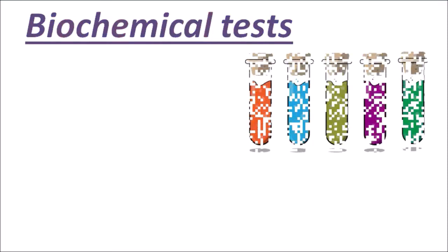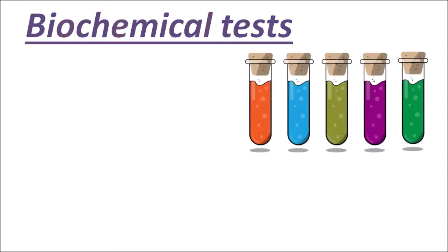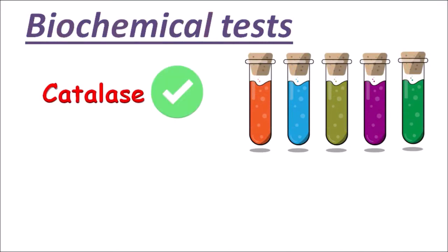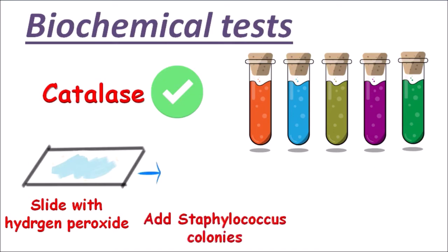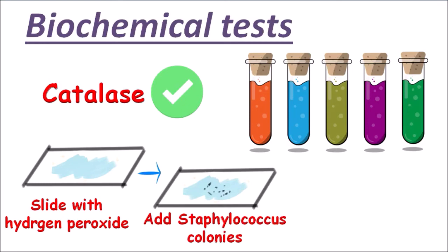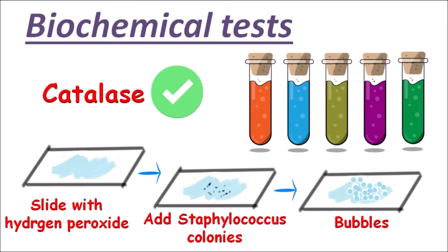Now we will discuss the biochemical tests of Staphylococcus aureus. It is a catalase positive bacteria. In the catalase test, we take a slide with hydrogen peroxide and add Staphylococcus colonies to it. Due to the production of the catalase enzyme, it breaks down hydrogen peroxide, resulting in the formation of bubbles.